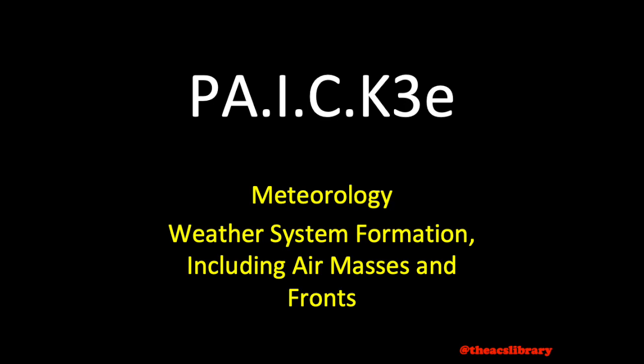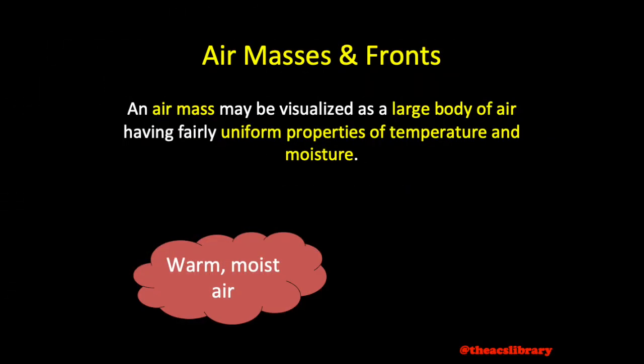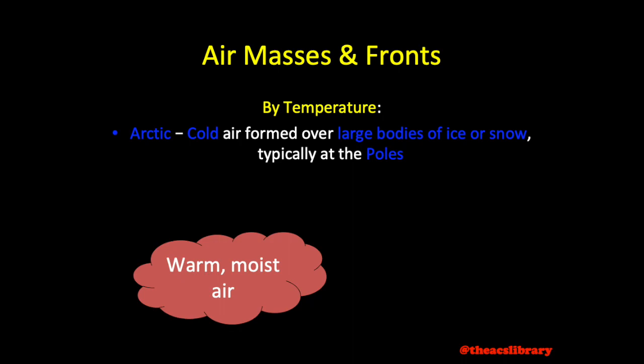One can better plan a flight when able to evaluate the expected effects of air masses and fronts. An air mass can be visualized as a large body of air having fairly uniform properties of temperature and moisture. Air masses are classified by these two properties. An arctic air mass is an extremely cold air mass formed over large bodies of ice and snow, typically near the poles.